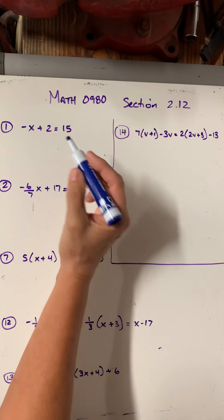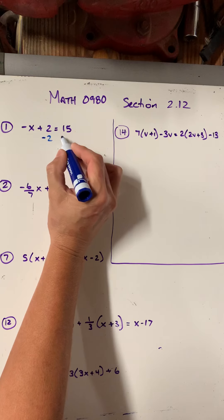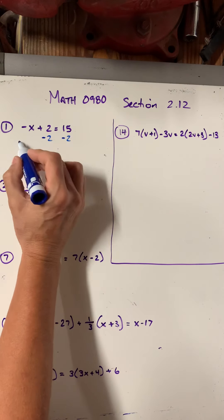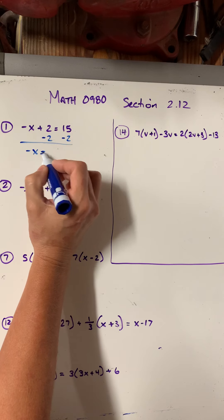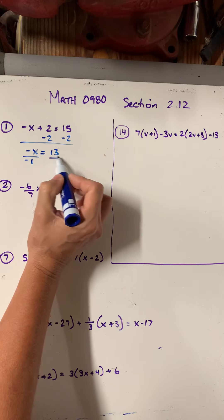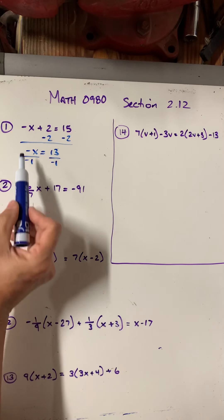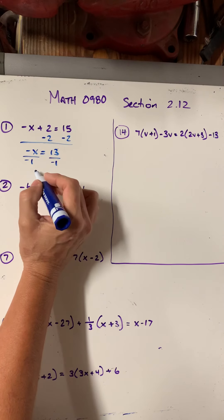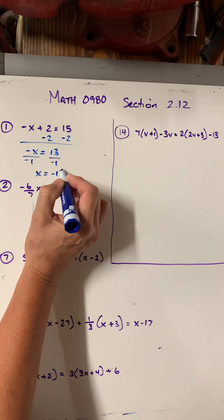Let's look at question 1. I have negative x plus 2 equals 15. I'm going to go ahead and move the 2 over by subtracting 2 on both sides. So I get negative x equals 13. Then my last move would be to divide by negative 1 so that I no longer have the negative in front of the x. So my answer becomes x equals negative 13.